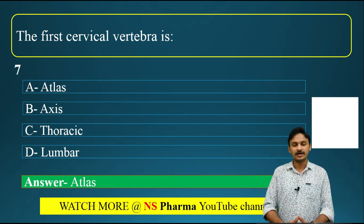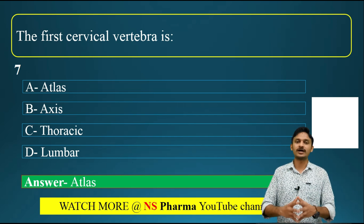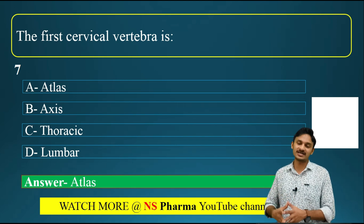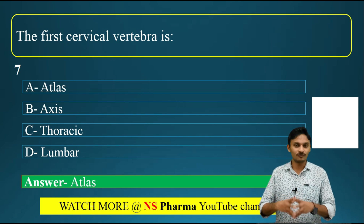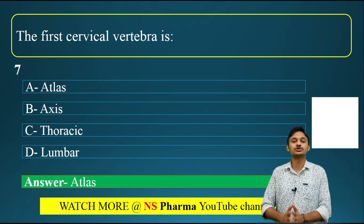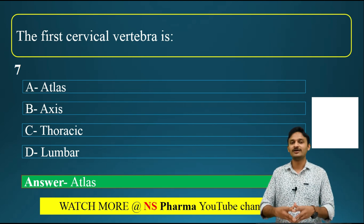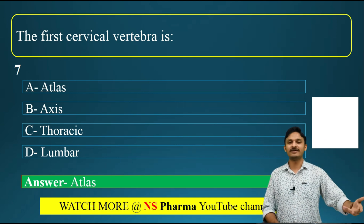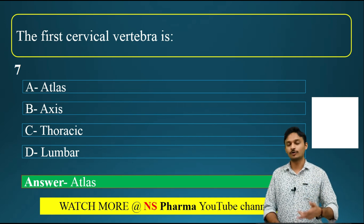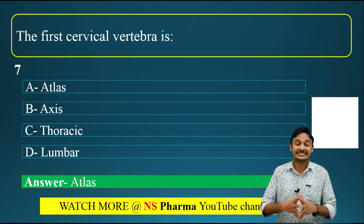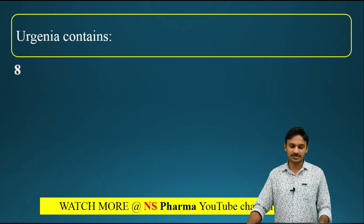We have 33 vertebrae in our vertebral column. The first seven are cervical (C1 to C7), then 12 thoracic (T1 to T12), then 5 lumbar vertebrae, then the sacrum composed of 5 fused vertebrae, and the coccyx composed of 4 vertebrae. That gives us C7 + T12 + L5 + S5 + coccyx 4 = 33 vertebrae total.